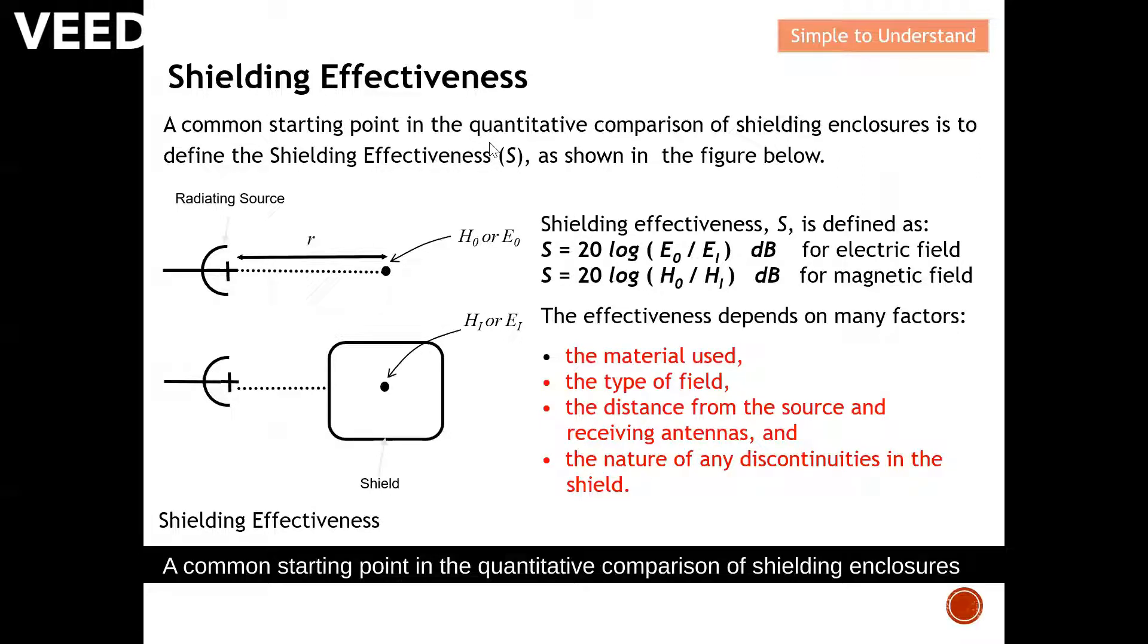How are we going to know the shielding effectiveness? A common starting point in the quantified comparison of shielding enclosures is to define shielding effectiveness as shown in the diagram. This is your noise source. You measure the magnetic field or electric field and denote as H₀ or E₀. Next you put a shield and measure at exactly the same distance. You measure the magnetic field and electric field, denoted as H₁ or E₁.